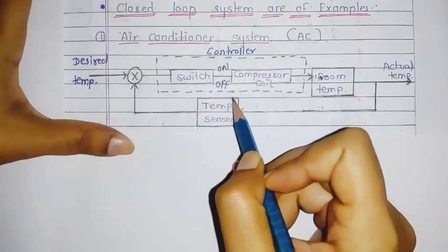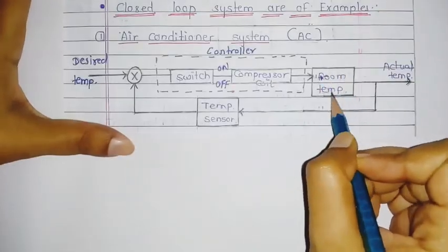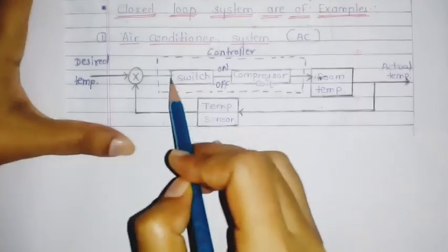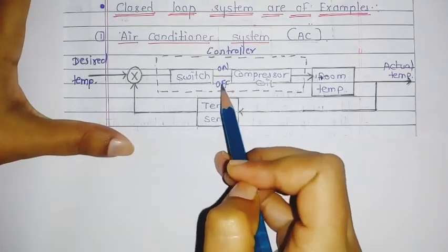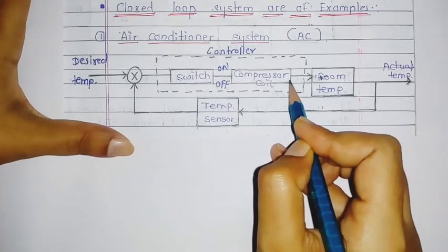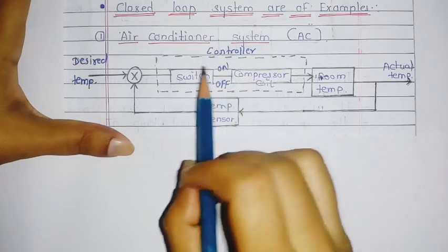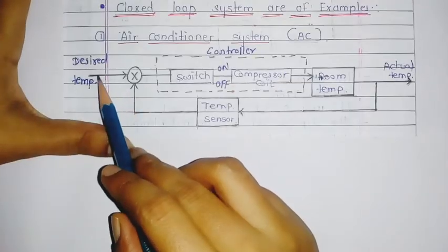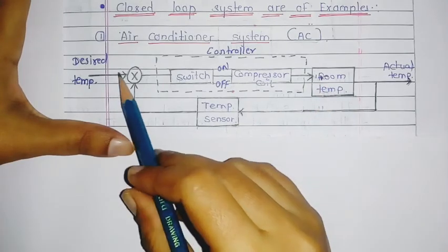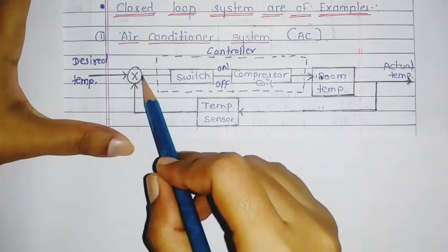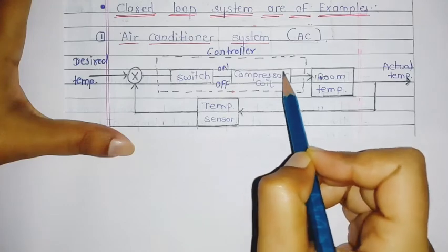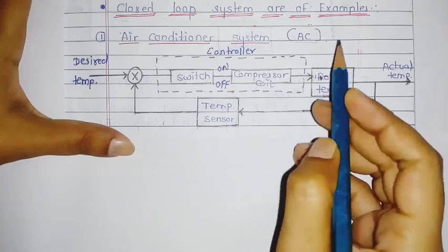The switch will turn on or off based on two conditions. The first condition is when the room temperature is greater than the desired temperature, then the switch will be off and the compressor coil will also be off. The second condition is when the room temperature is less than the desired temperature, then the switch will be on and the compressor coil will be on.